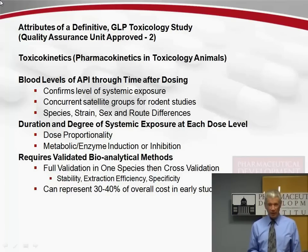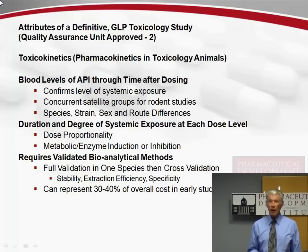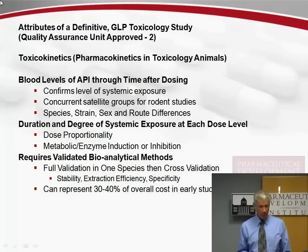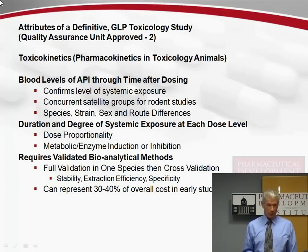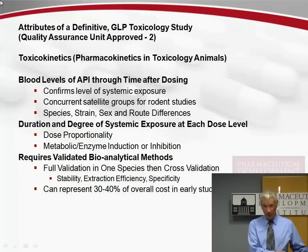Moving to slide two — the attributes of a definitive GLP toxicology study. We perform toxicokinetics, that is pharmacokinetics in the toxicology animals within that particular study. What we're looking for here are the blood levels of the active pharmaceutical ingredient through time after dosing. This confirms the level of systemic exposure. For rats, we don't want to bleed them on a regular basis, so we have what are called satellite groups of rats — in separate cages, treated identically at the same time as the toxicology study animals — and those rats are bled.